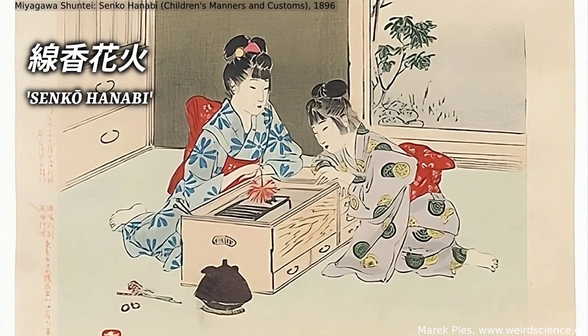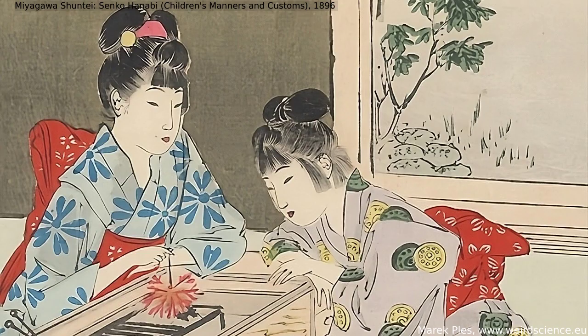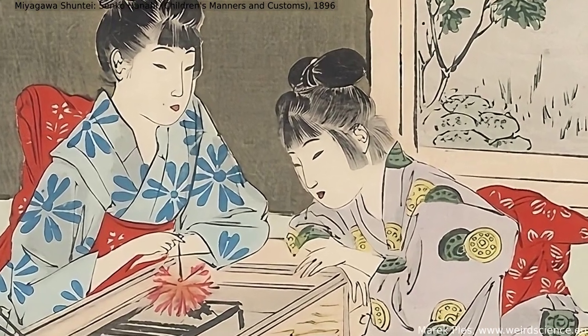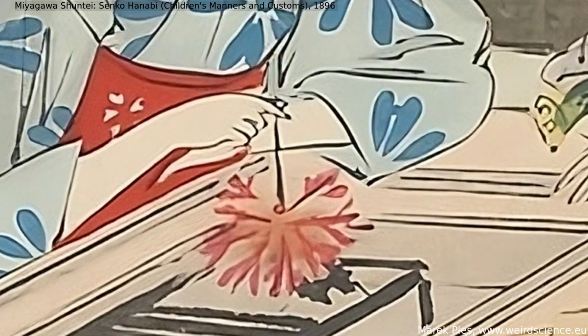Senko Hanabi is a traditional Japanese firework known since the turn of the 19th and 20th centuries. It consists of a slender rod made of twisted tissue paper with one end containing a small amount of a special pyrotechnic mixture.